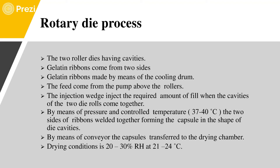The drying conditions required for the production of soft gelatin capsules are 20 to 30% RH at 21 to 24 degrees Celsius. It is very important to maintain the required temperature and pressure conditions because we are dealing with soft gelatin capsules and need to ensure they are formed properly.